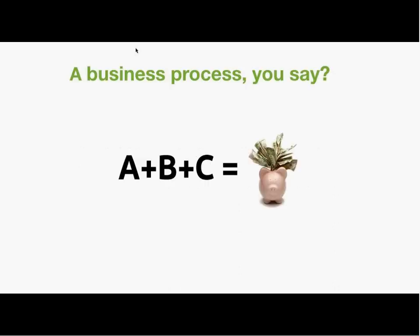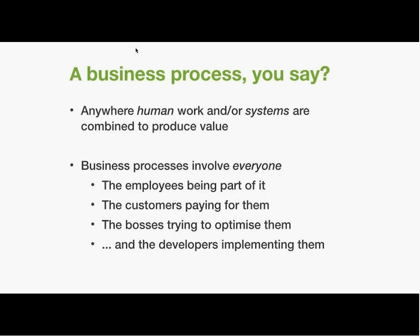What is a business process? Every company has at least one, maybe hundreds of business processes — anywhere you combine a certain amount of steps in a certain order or sequence to produce some value. It can be monetary, or it can be an internal document you want to create, or helping a customer. It's what differentiates your company from others. From Activiti's point of view, anywhere you combine human work with system calls is where it gets interesting to automate.